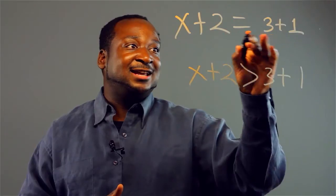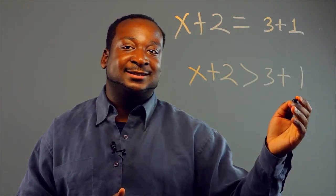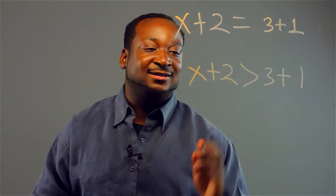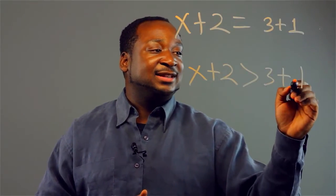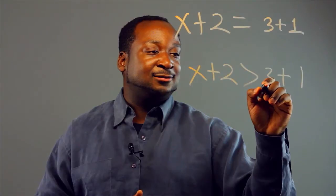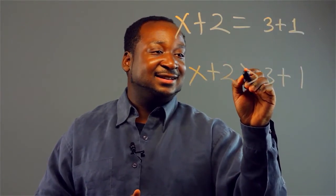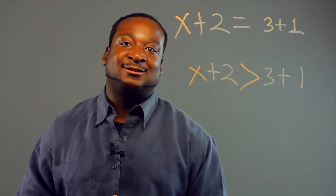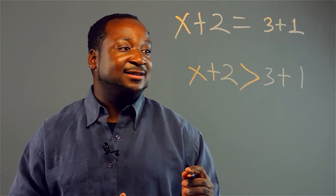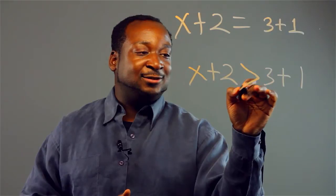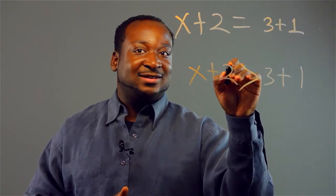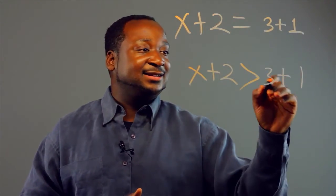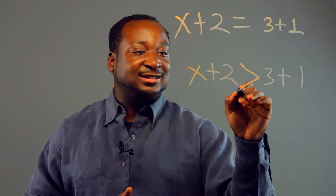Just like in the first equation, you could read this in reverse. But in this case, you do the opposite because it is an inequality. So this would read 1 plus 3 is less than — because the arrow is pointing this way — 2 plus x. So x plus 2 is greater than 3 plus 1 is the same as saying that 3 plus 1 is less than 2 plus x.